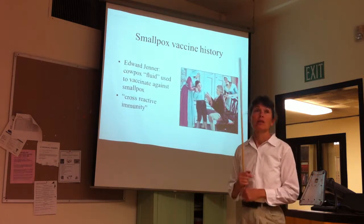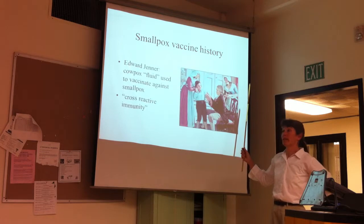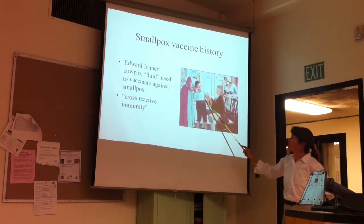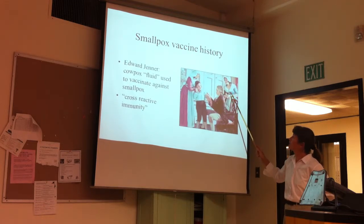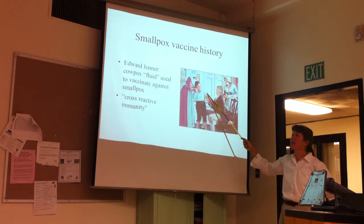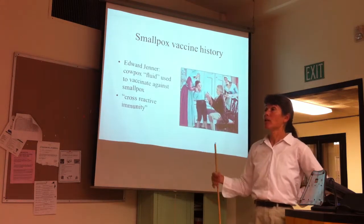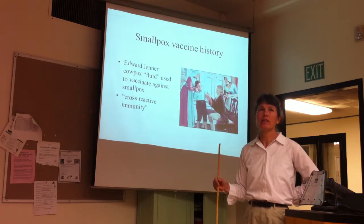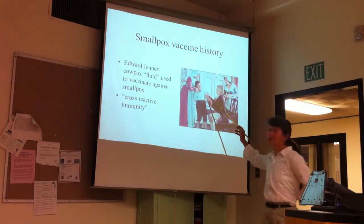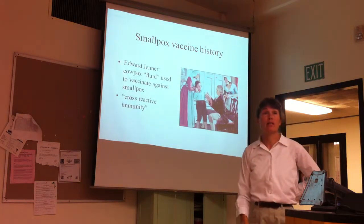Jenner decided to run an experiment — and this is a rather unethical experiment. He asked his gardener if he could use his son. Jenner inoculated the boy with fluid from the cowpox vesicle on the milkmaid, harvesting fluid and scraping it into the arm of the boy. That part wasn't too bad because everybody knew cowpox wouldn't kill you. But the next part was very unethical: Jenner then harvested fluid from one of his smallpox patients and purposely inoculated the little boy, to see if the cowpox material had protected him against smallpox. Luckily it did — the little boy did not get smallpox. But using human subjects to run challenge experiments like that is totally unethical.